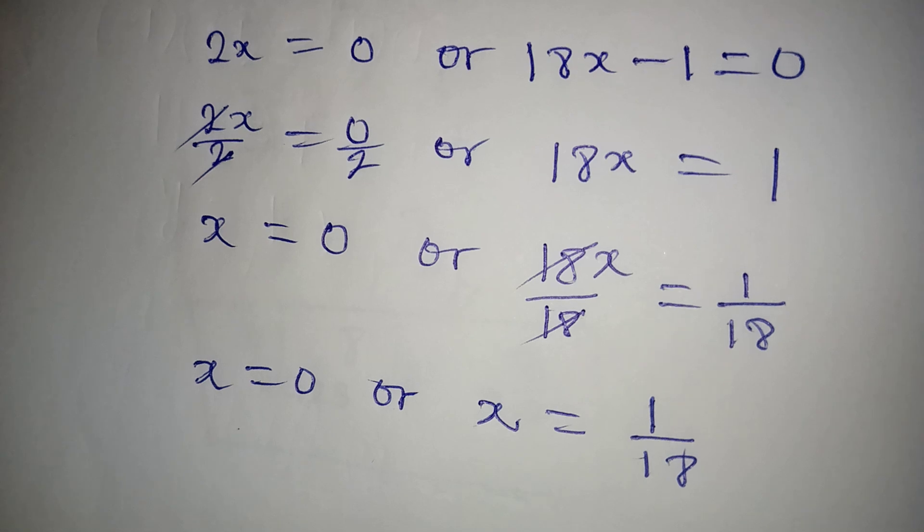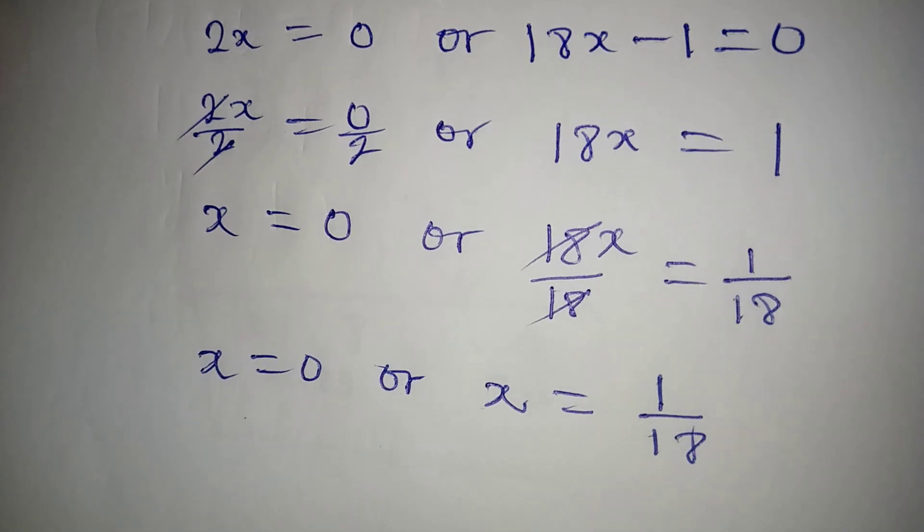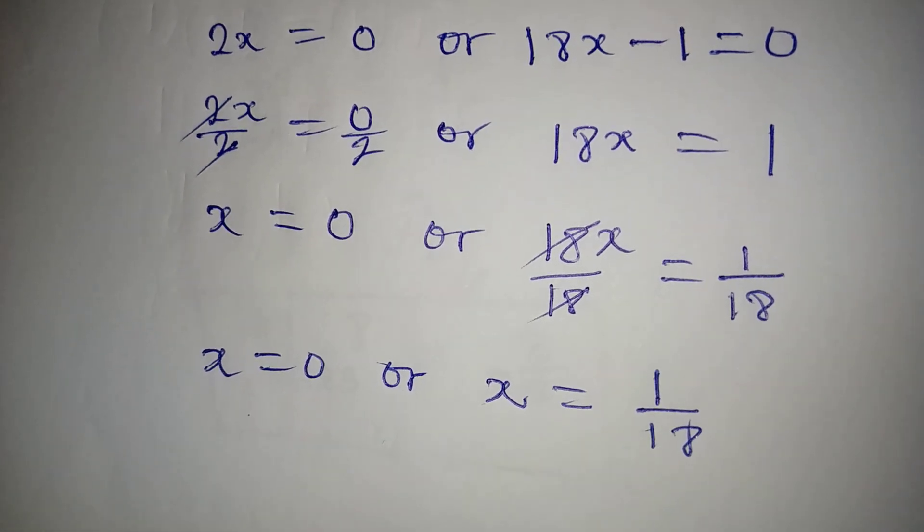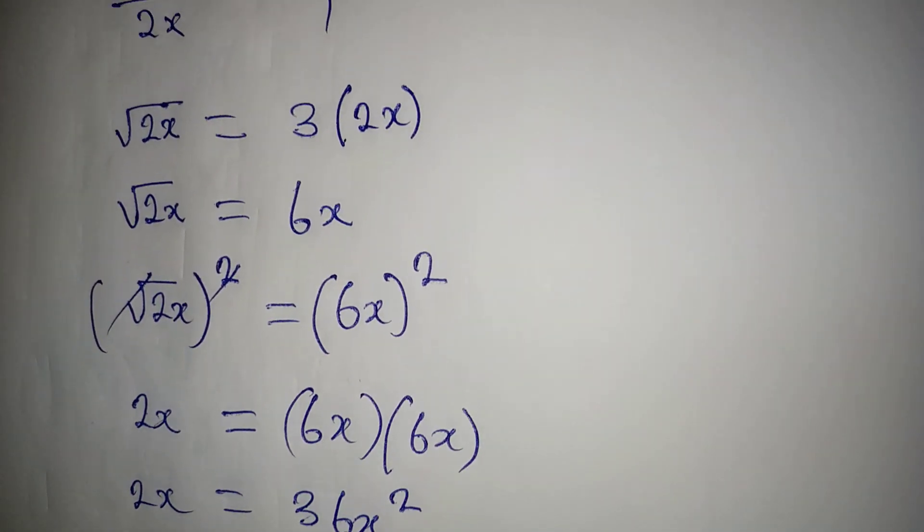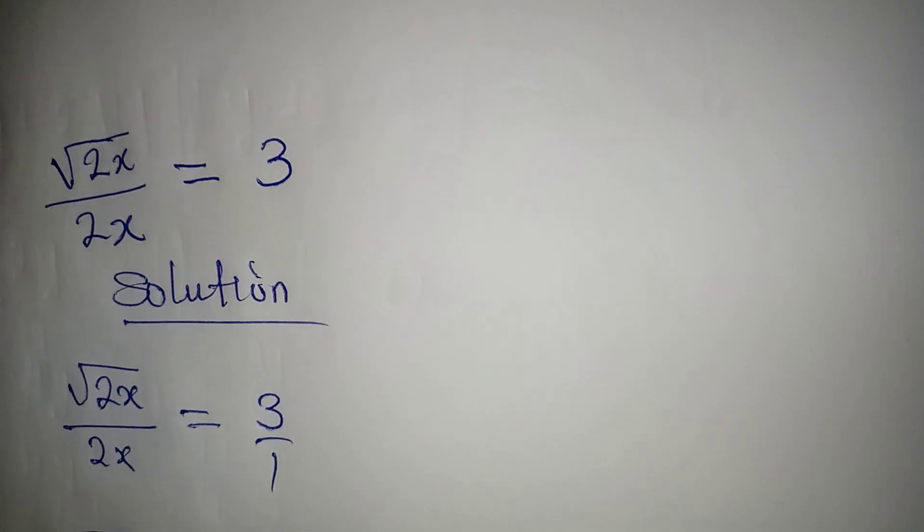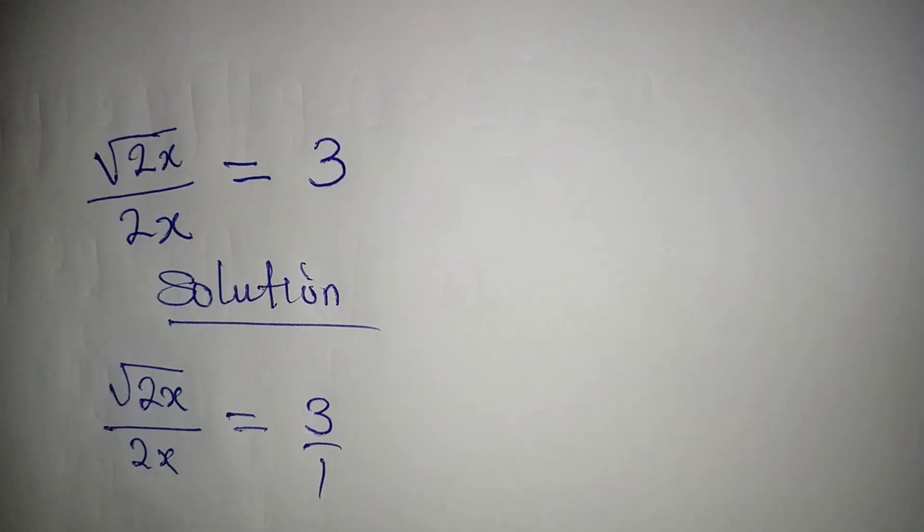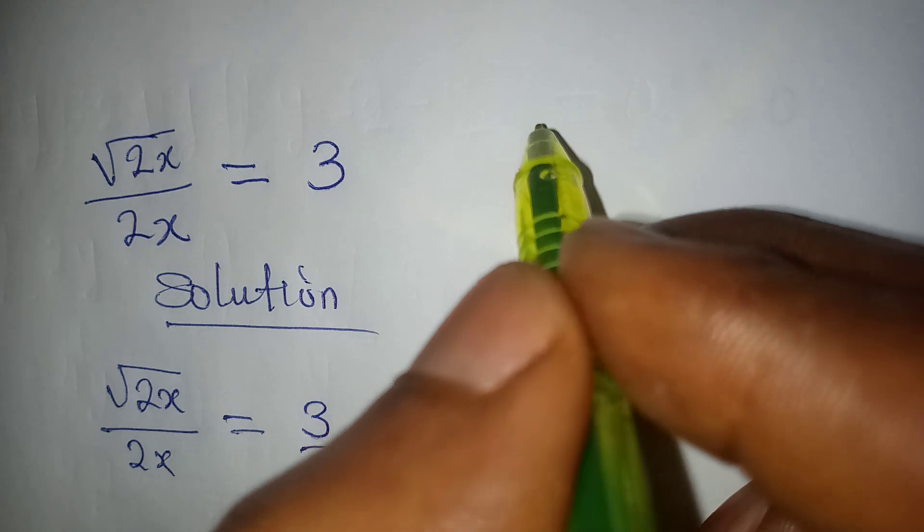Or on the other side x will be equal to 1 over 18. So you can put this value of x into the equation and see if it's going to satisfy. Now what is the equation we got? Square root of 2x over 2x equal to 3.